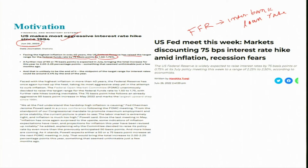What the Federal Reserve System does is fix a target range. Here the target range is 1.50% to 1.75%, and the actual transactions between banks determine where the rate falls within that range.